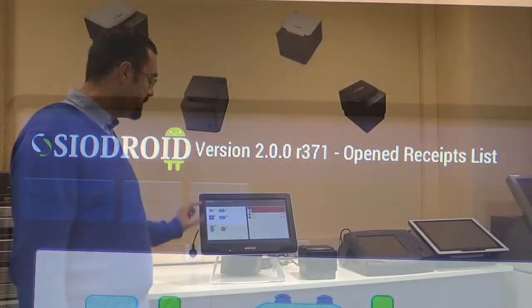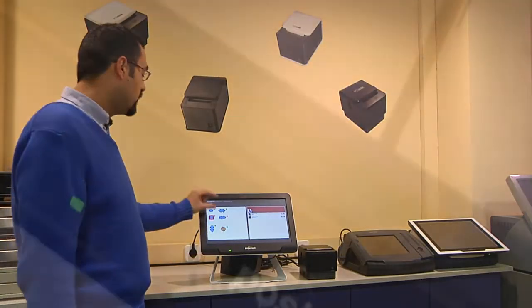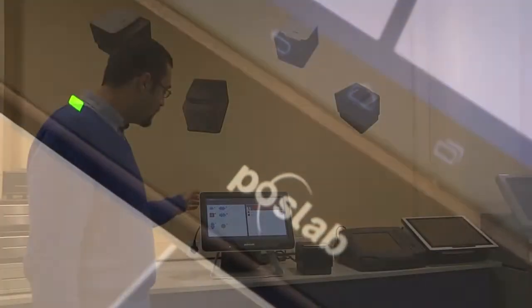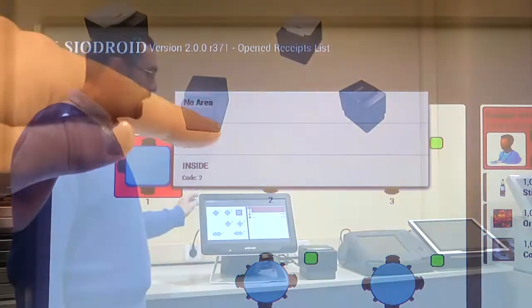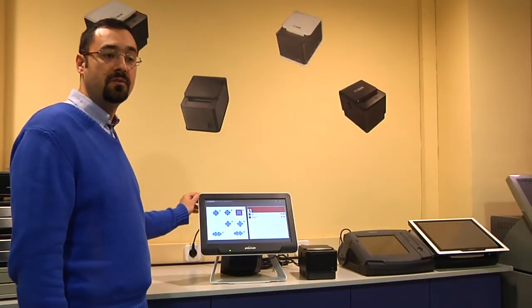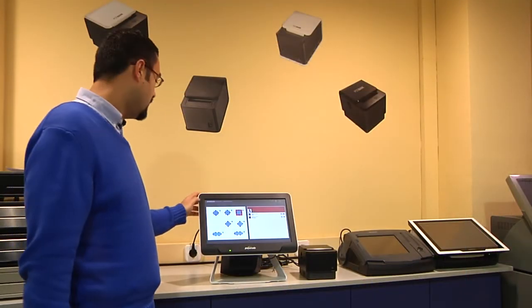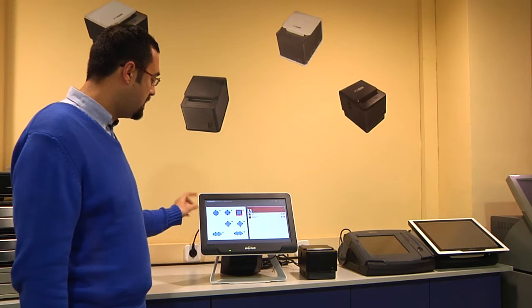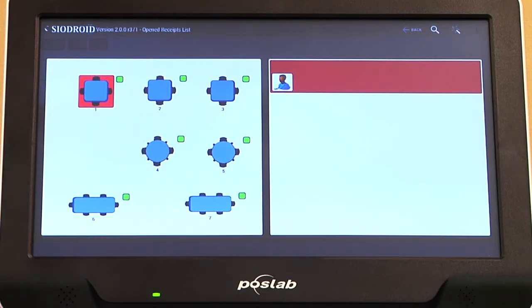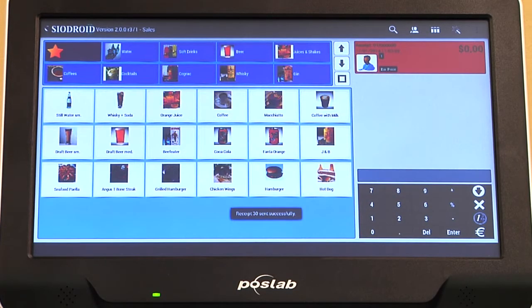In the software you can see by default a table map with all your tables. You can choose between different areas of tables if your restaurant is big enough and then just click on one of the tables and then we go to the sales screen.